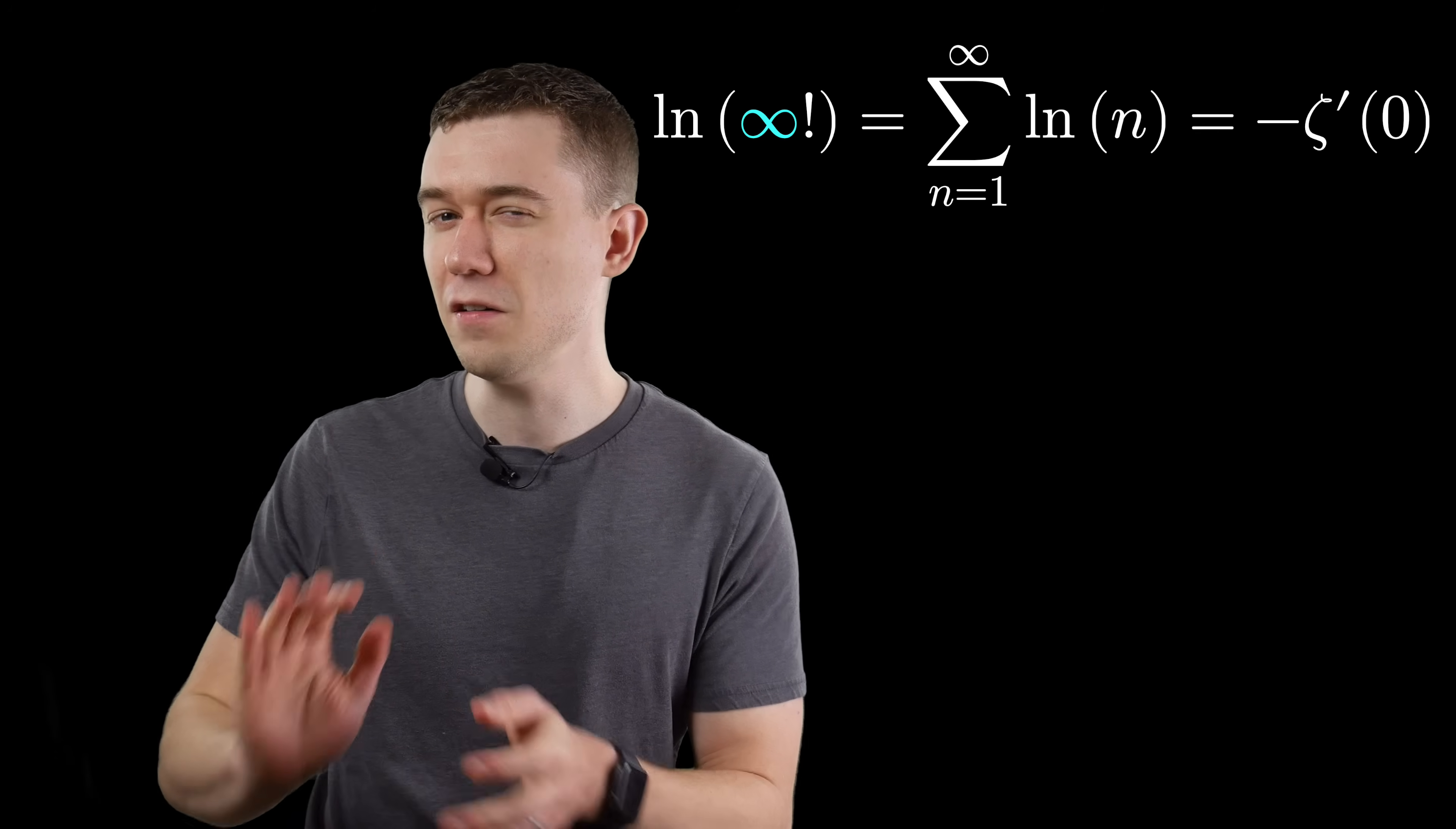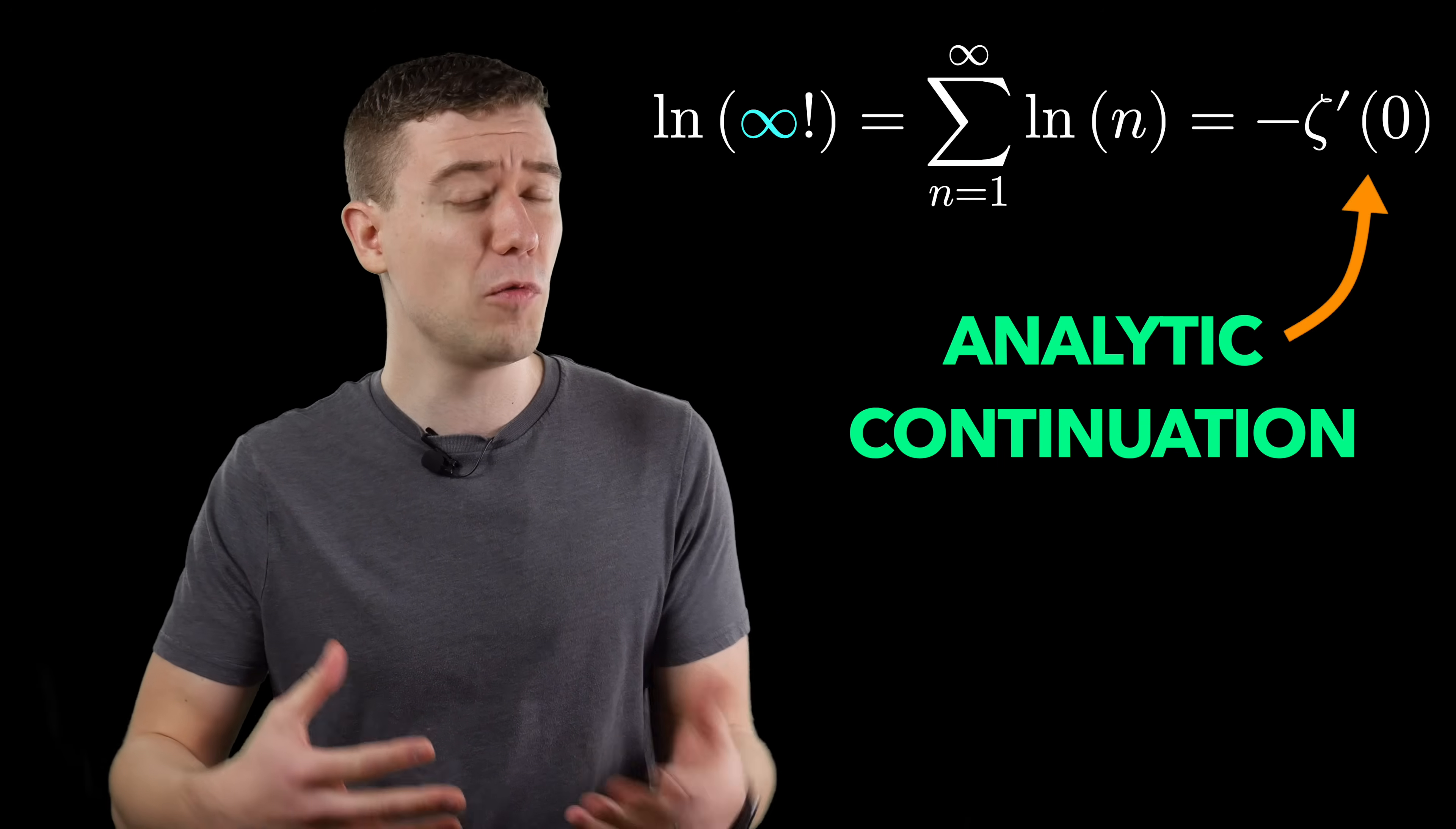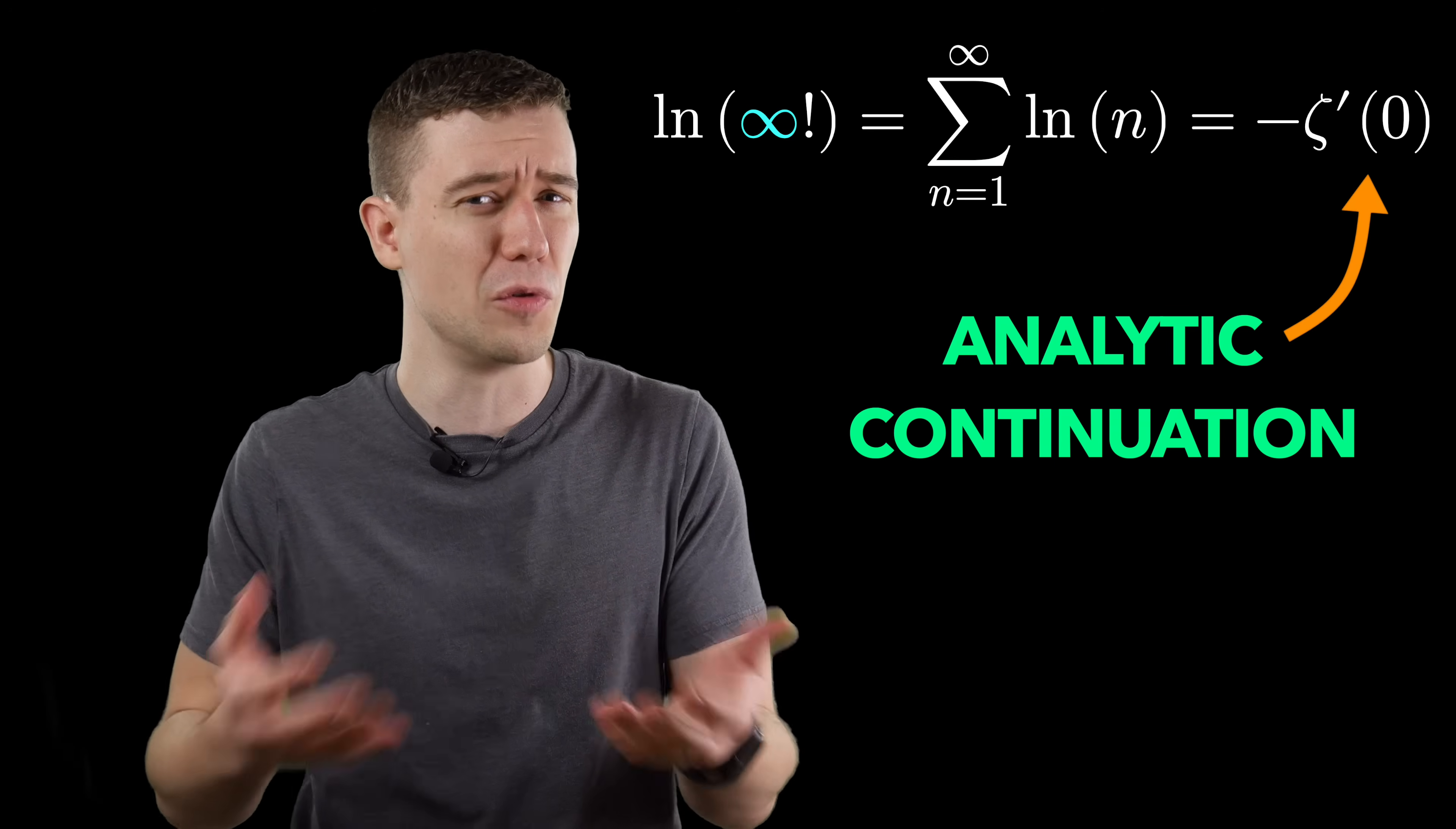There's a bit of a caveat here. We're using the analytic continuation of the Riemann zeta function, which is an idea I've touched on in a previous video. Essentially, we're extending the domain of the Riemann zeta function to substitute in more values that don't normally make sense.